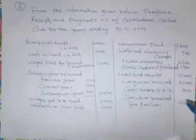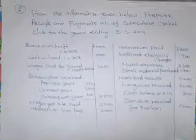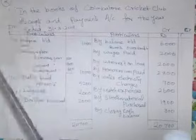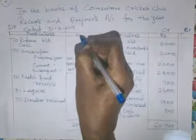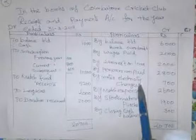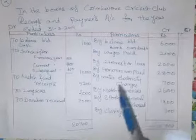Now how to prepare Receipts and Payments Account. Bank overdraft — by balance brought down. In the books of Coimbatore Cricket Club, Receipts and Payments Account for the year ended 31st March 2019. Debit side and credit side, particulars and amount in rupees. To balance brought down — opening cash balance Rs. 1,000. Overdraft balance — unfavorable balance, shown on the payment side — by balance brought down: bank overdraft Rs. 6,000.